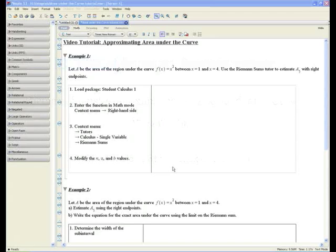Welcome to the Approximating the Area Under the Curve video tutorial. Example 1: Let A be the area of the region under the curve f(x) = x² between x equals 1 and x equals 4. Use the Riemann sums tutor to estimate A_5, which is estimating the area under the curve with 5 rectangles.